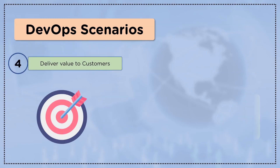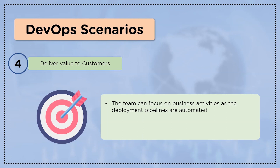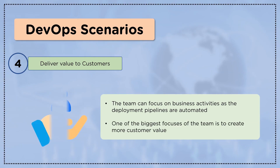The last DevOps scenario is delivering value to customers. DevOps teams can focus on business activities as the deployment pipelines are automated. The culture reduces the time to deliver value to customers. One of the biggest focuses of the team is to create more customer value. DevOps activities increase the sustainable competitive advantage of a company and create better business outcomes.